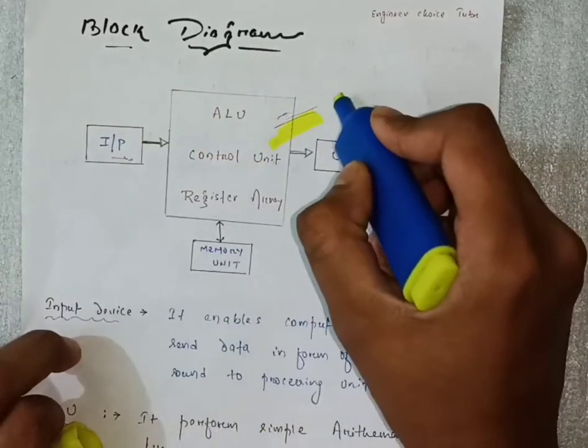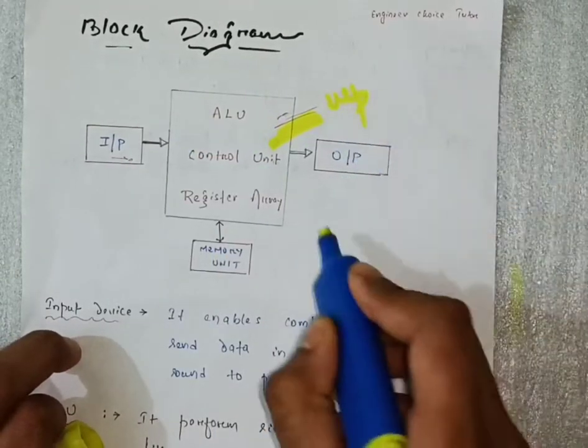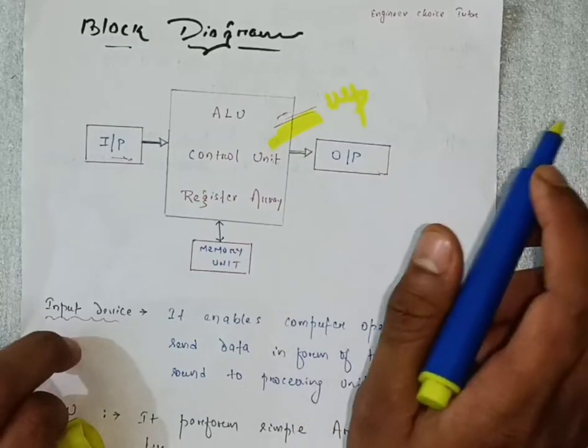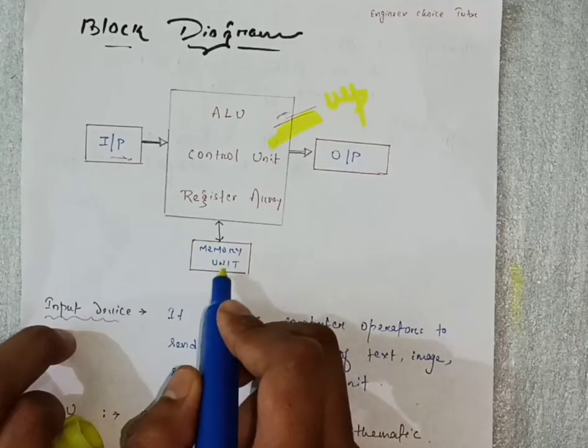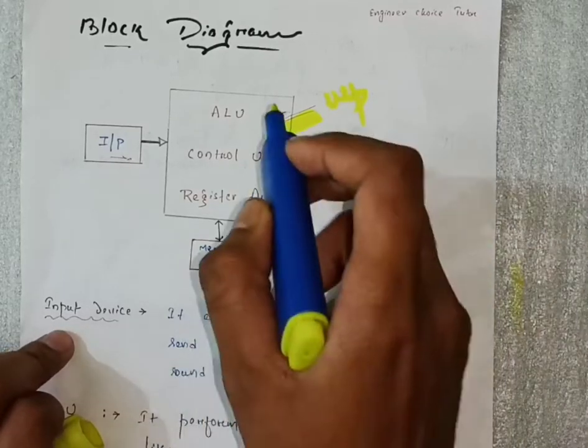This center one is the microprocessor and it will produce the output. Here one memory section will be present, so it will feed some instructions to the microprocessor.